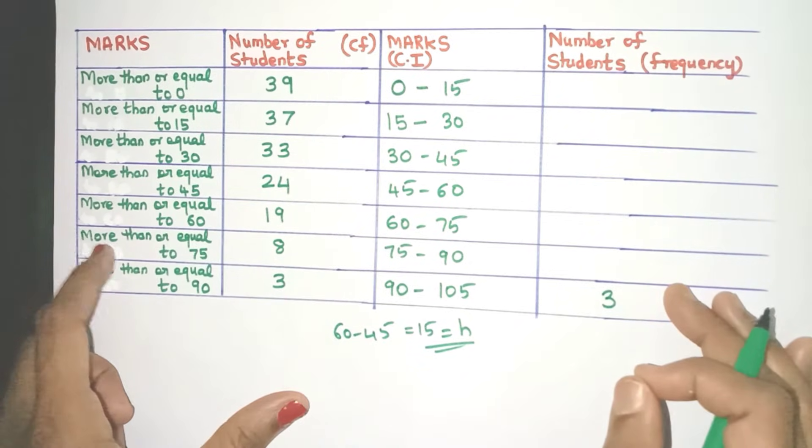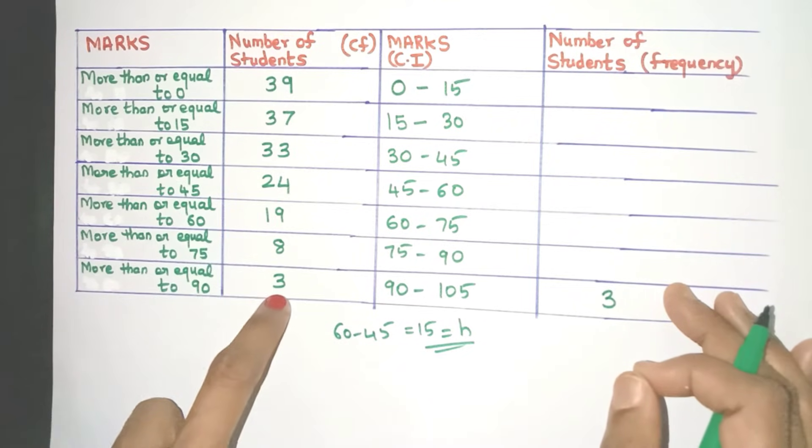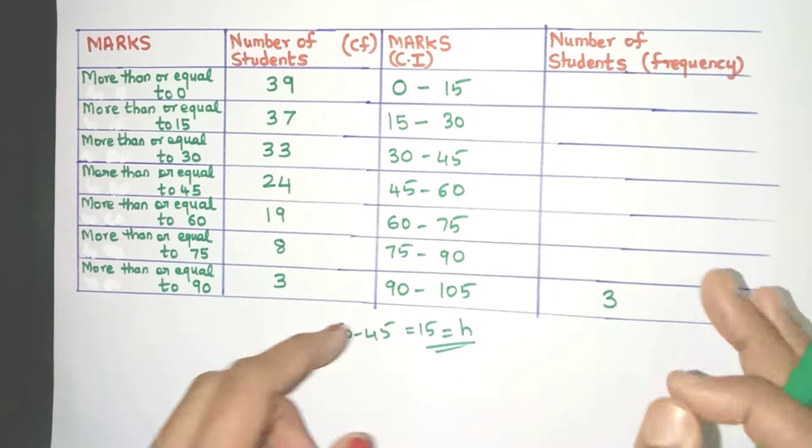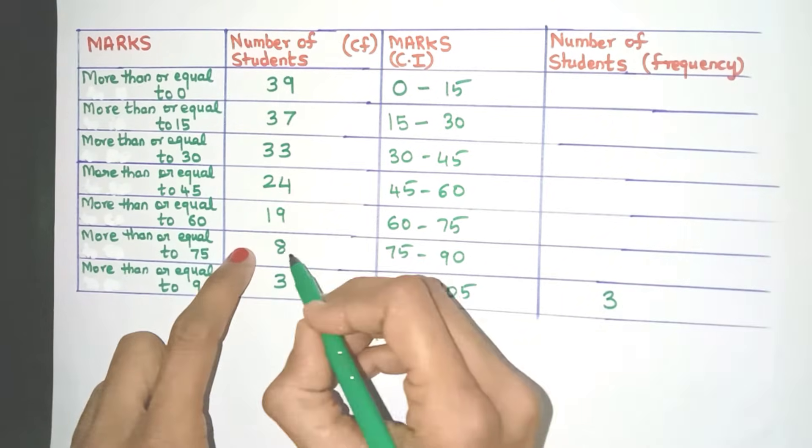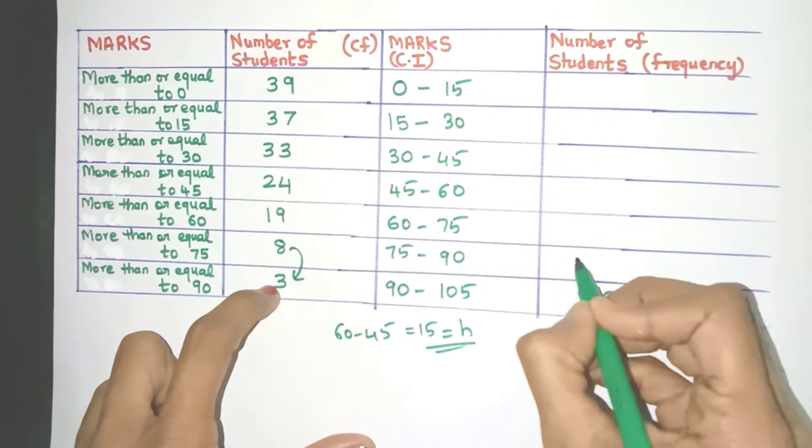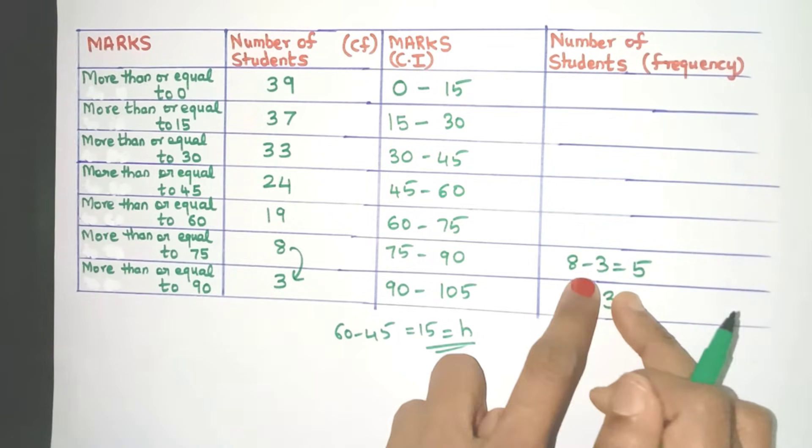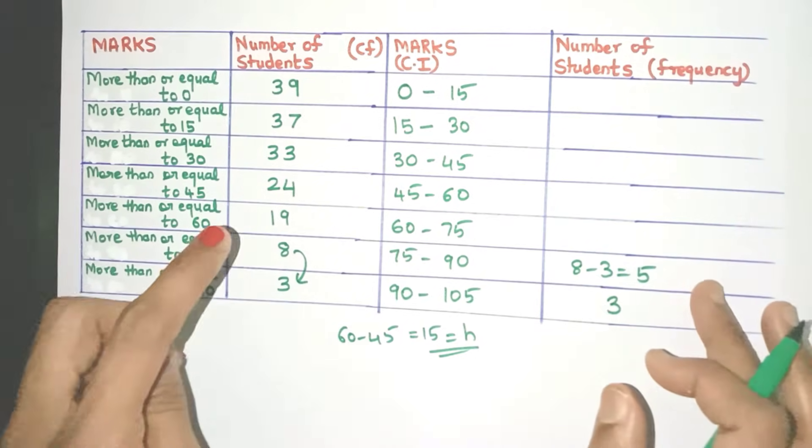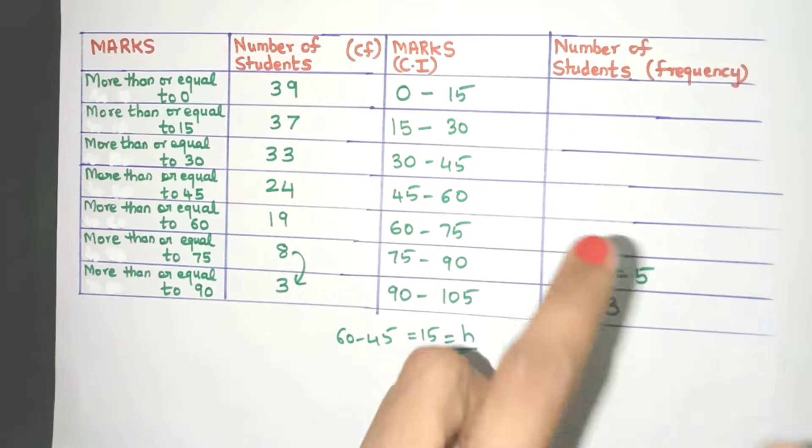Now let's see the next one more than or equal to 75. There are eight students. So definitely this includes all the three students whose marks are more than or equal to 90. But we want only from 75 to 90. So what should we do? Yes, we just have to subtract 8 and 3. So 8 minus 3 which is 5. We'll get the frequency friends. So what is the rule over here? Present CF minus the next CF gives you the present frequency value.